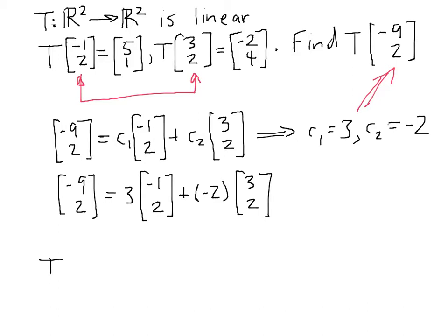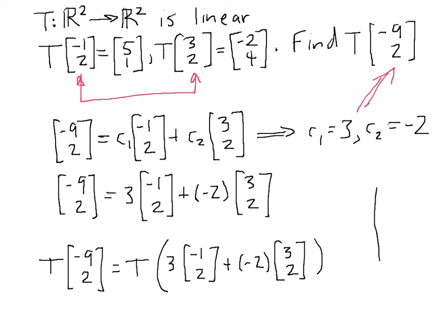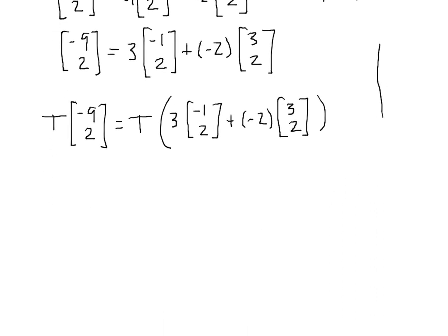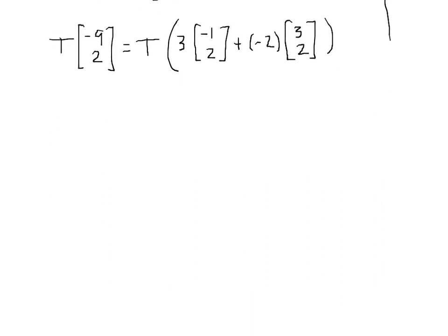So T of [-9, 2] is equal to T of the above linear combination: 3 times [-1, 2] plus -2 times [3, 2]. Now we can apply the linearity properties of the transformation T. The first linearity property tells us that the transformation of a sum is the sum of the transformations. So this becomes T of 3[-1, 2] plus T of -2 times [3, 2].